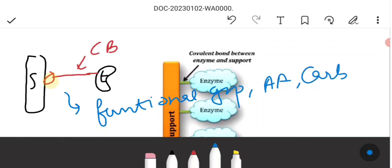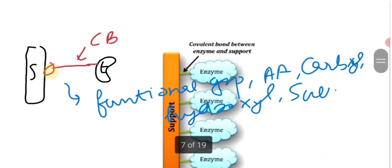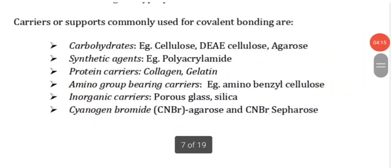The functional groups can be amino acid groups, carboxyl groups, hydroxyl groups, or sulfhydryl groups. The support surface can be carbohydrates like cellulose, DEAE cellulose, agarose, synthetic agents like polyacrylamide, protein carriers like collagen or gelatin, amino group bearing carriers like aminobenzyl cellulose, inorganic carriers like porous glass or silica, cyanogen bromide agarose and cyanogen bromide Sepharose.